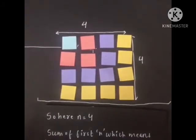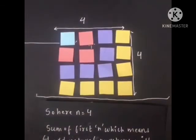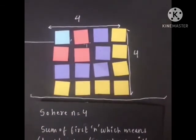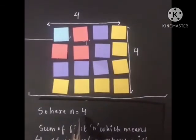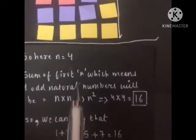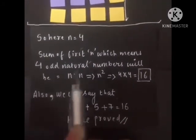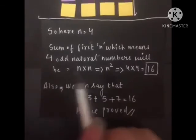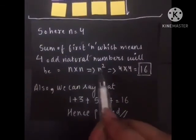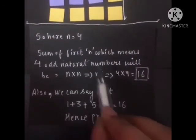And if we have to cross-check this, we can take this case. So here n equals to 4. So sum of first n, which means 4 odd natural numbers, will be n into n, n squared, which is n squared. So by putting n equals to 4, it will be 4 into 4, that is 16.